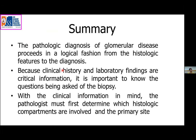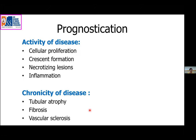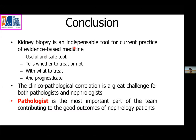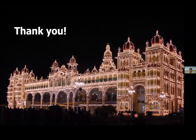The pathologic diagnosis of glomerular disease proceeds logically from histological features to diagnosis. Clinical history and laboratory findings are critical; the pathologist must determine which histological compartments are involved and the primary site. The activity and chronicity of disease are very important in prognostication. In conclusion, kidney biopsy is an indispensable tool for evidence-based medicine — it tells whether to treat, with what to treat, and provides prognostication. The clinical-pathological correlation is a great challenge for both pathologists and nephrologists, but this is a field where such correlation is excellent, and the pathologist is the most important part of the team contributing to good outcomes.